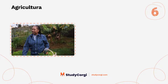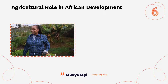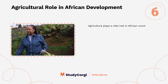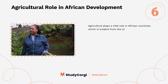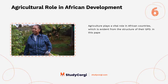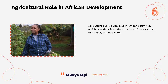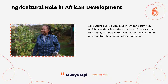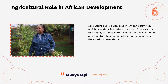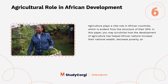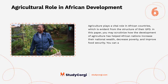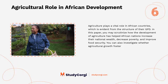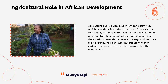Agricultural role in African development. Agriculture plays a vital role in African countries, which is evident from the structure of their GDP. In this paper, you may scrutinize how the development of agriculture has helped African nations increase their national wealth, decrease poverty, and improve food security. You can also investigate whether agricultural growth fosters progress in other economic sectors in this region.